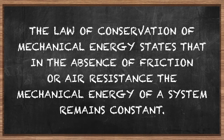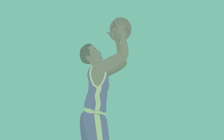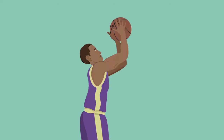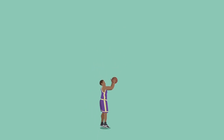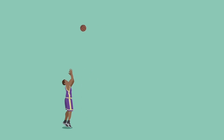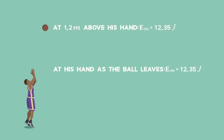Let's apply this idea to the basketball. If air resistance is so small that its effect can be ignored, then the mechanical energy of the ball when it is thrown up into the air is the same as its mechanical energy at 1.2 meters above the player's hand — and it's the same even when the ball reaches its maximum height. This is very useful when solving problems. Let's find out the speed of the ball when it left the player's hand.